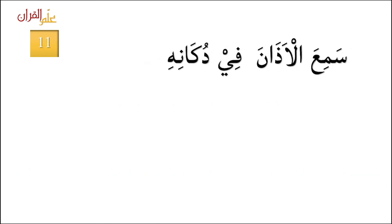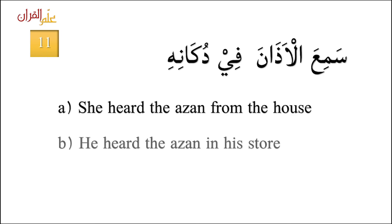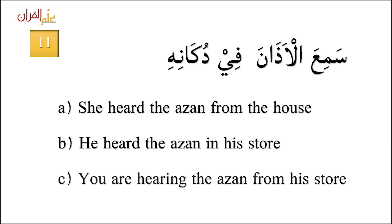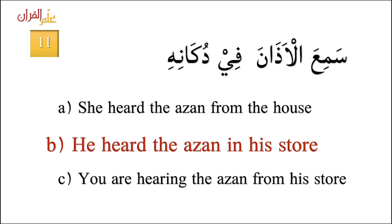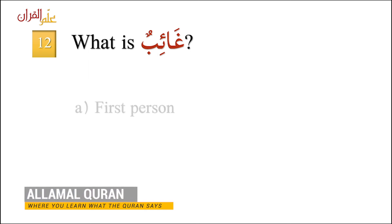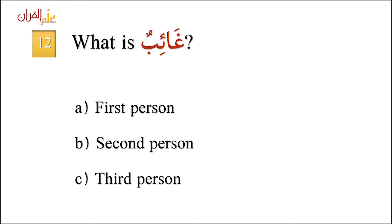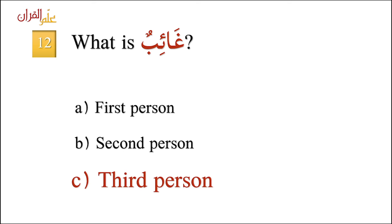Question eleven: Sami'a al-adhana fi dukanihi — A. She heard the adhan from the house, B. He heard the adhan in his store, C. You are hearing the adhan from his store. The correct answer is B — he heard the adhan in his store. Question twelve: What is gha'ib? A. First person, B. Second person, C. Third person. The correct answer is C — third person. Gha'ib is the third person, the person about whom you are speaking.